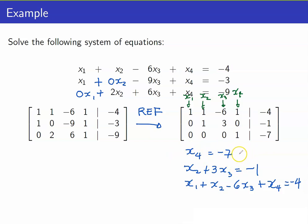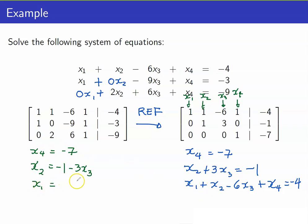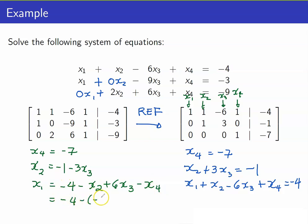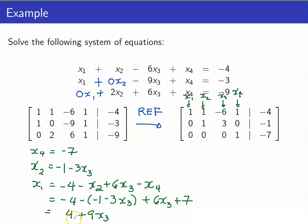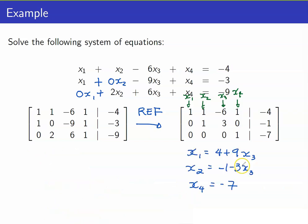We now have our value that x4 is negative 7. I will now solve for the remaining variables. From the second equation, we have that x2 is equal to negative 1 minus 3x3. When solving for x1, we have that x1 is negative 4 minus x2 plus 6x3 minus x4. Substituting, my x2 is negative 1 minus 3x3, plus 6x3, and my x4 is equal to negative 7, so this becomes positive 7. Hence, we get that x1 is equal to 4 plus 9x3.